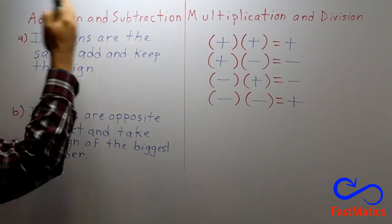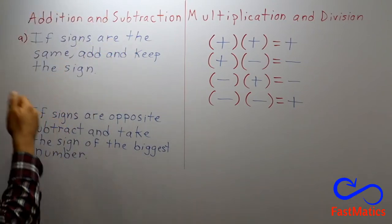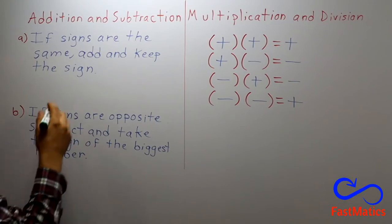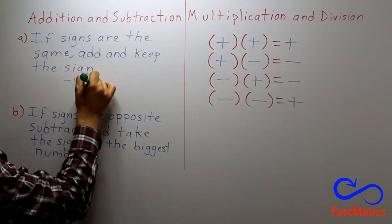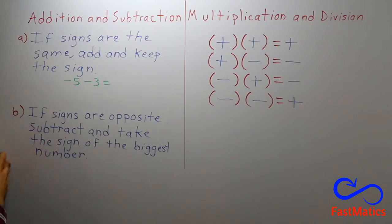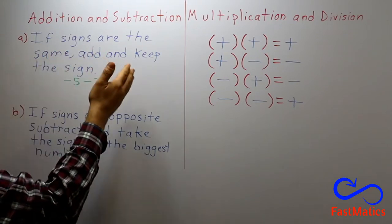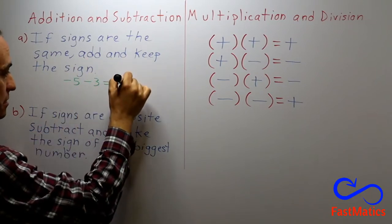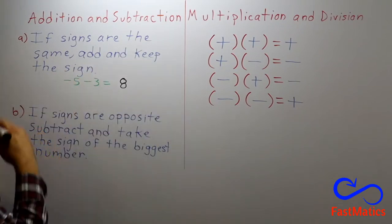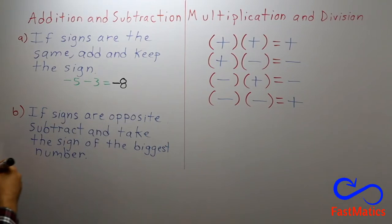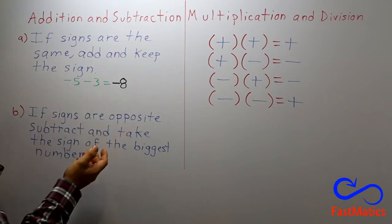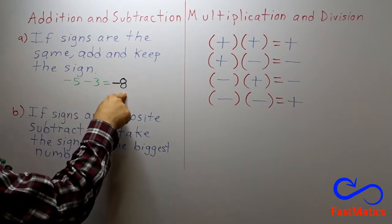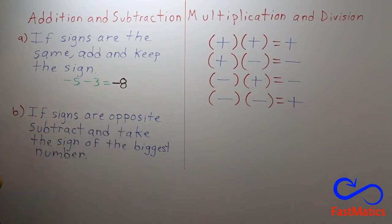When you add or subtract, the first rule: if signs are the same, add and keep the sign. For instance, minus five minus three equals—you read the rule, you have to add five plus three, eight, and keep the sign. What's the sign? It is a negative sign. Why? Well, that is, if you owe five dollars and after that you owe three dollars, you owe eight dollars.